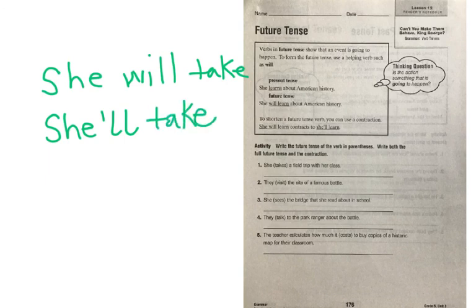For future tense, that sentence would read she will take a field trip with her class, or if you use the contraction, she'll take a field trip with her class. On that line, you need to write she will take or she'll take, both of those forms because it asks for both. You're going to continue that on for two, three, four, and five on your own.